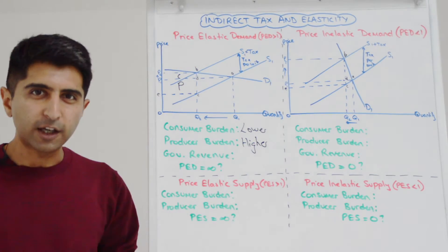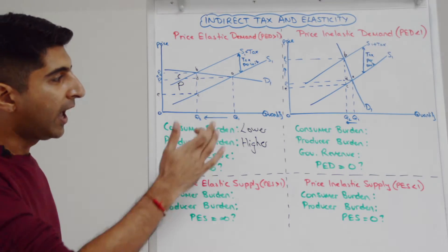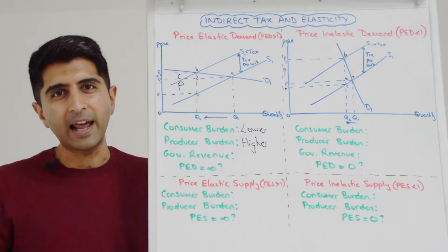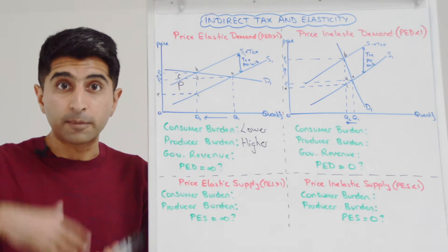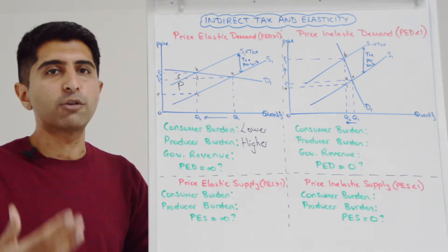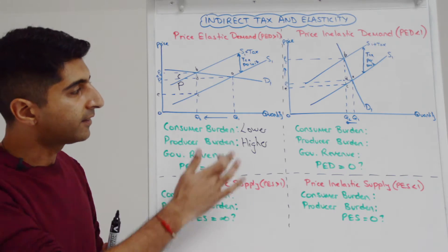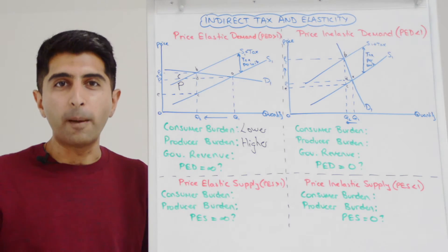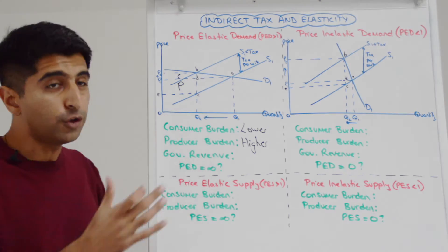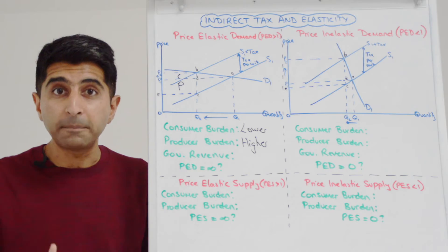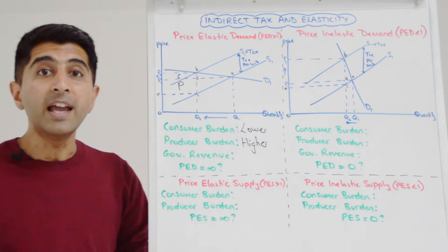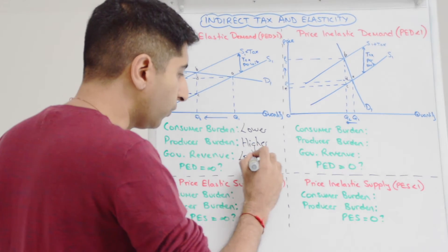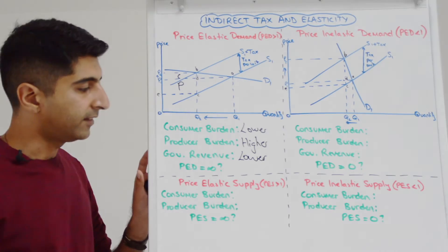We can also make a conclusion about government revenue. Because quantity falls a lot — demand is price elastic, so the fall in quantity is proportionately greater than the increase in price — that big fall in Q means fewer units are being produced and sold. That means fewer units are subject to the indirect tax, so government revenue is also lower when demand is price elastic.